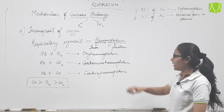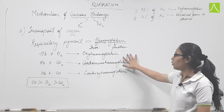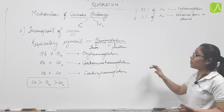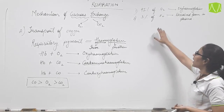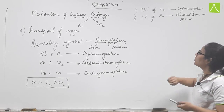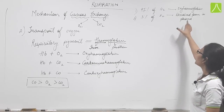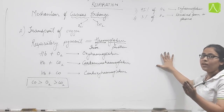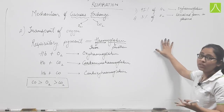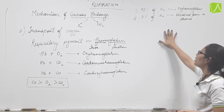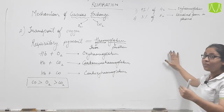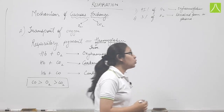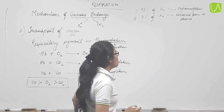Hemoglobin binds with oxygen to form oxyhemoglobin, which then travels from the lungs to the target site. 97% of oxygen is bound with hemoglobin as oxyhemoglobin and travels from the lungs to the tissues. The remaining 3% of oxygen travels in dissolved form through the plasma.